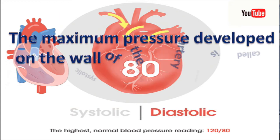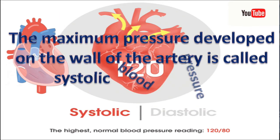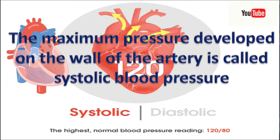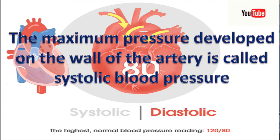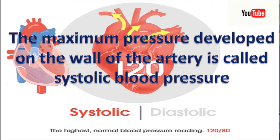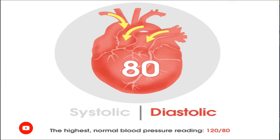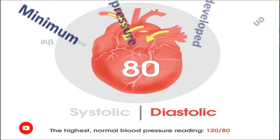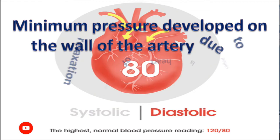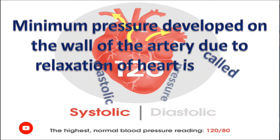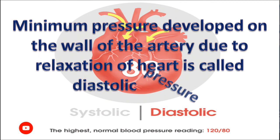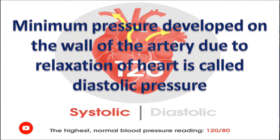The maximum pressure developed on the wall of the artery is called systolic blood pressure, which is 120 mm Hg. The minimum pressure developed on the wall of the artery due to relaxation of the heart is called diastolic pressure. It is 80 mm Hg.